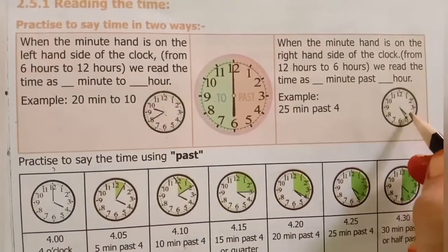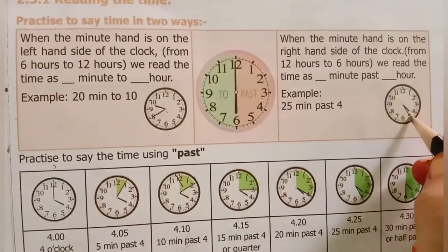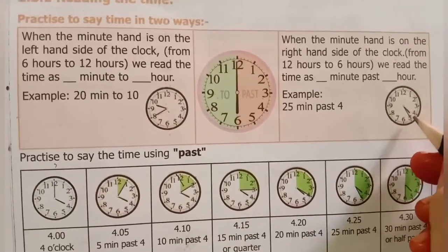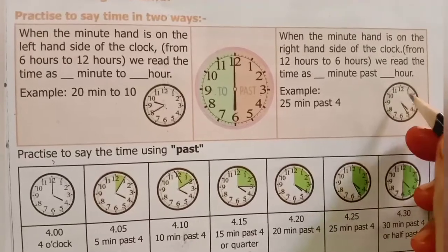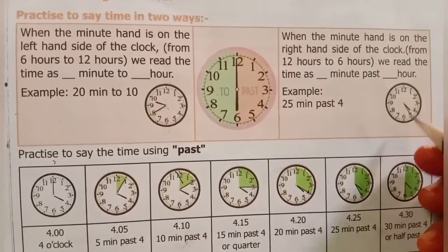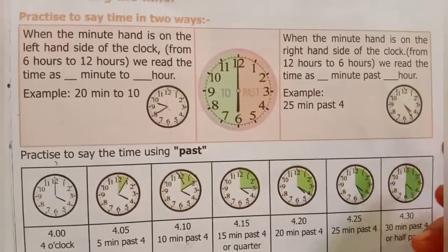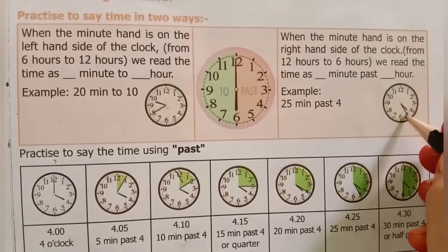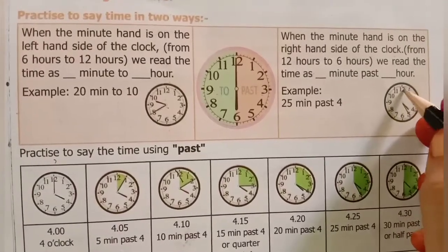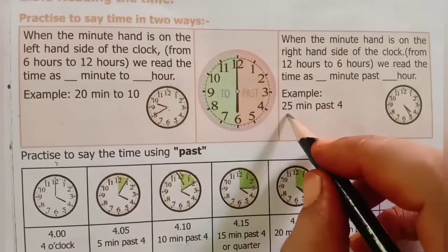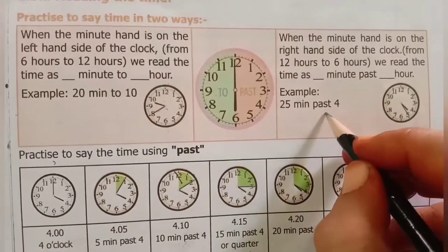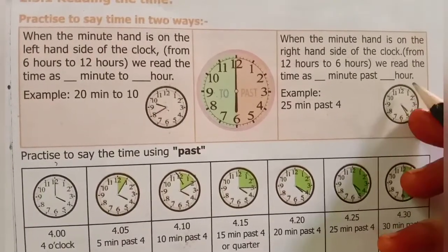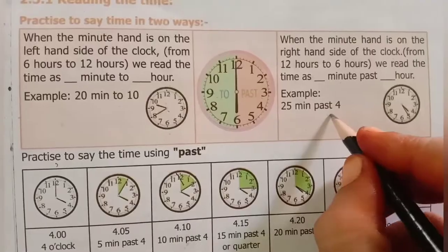Now we have 4 and 5. Now we know how to do it: 4:25. Now it is 25 minutes — this is more than 4 o'clock. Now we are going to say 25 minutes past 4. That is 4 o'clock plus 25 minutes — we say 25 minutes past 4.